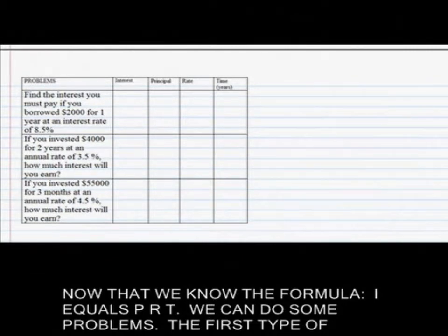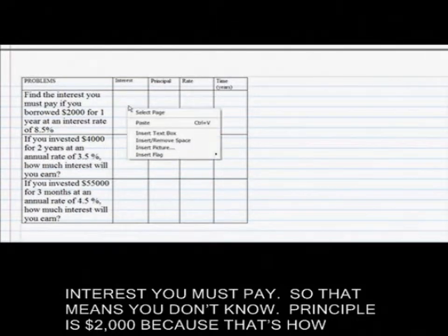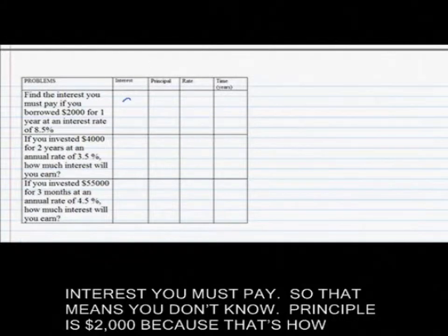The first type of problem is just finding the interest. And the problems are going to be worded somewhere like, find the interest you must pay if you borrow $2,000 for one year at an interest rate of 8.5%. Find the interest you must pay, so that means you don't know it.